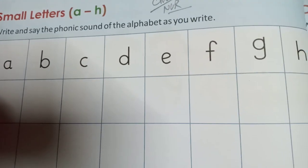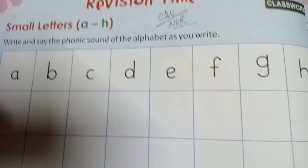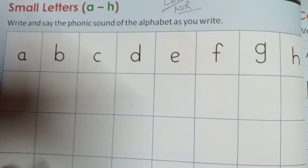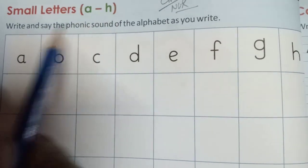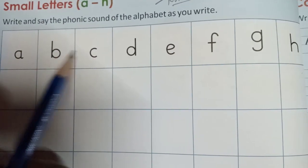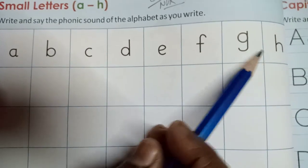Hello everyone. Nursery English classwork, page number 58, semester book 2. Today we do small letters a to h. You have to write small letters a to h: a, b, c, d, e, f, g, h.